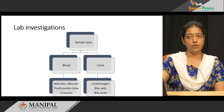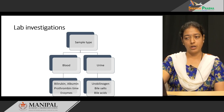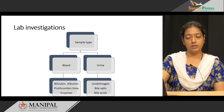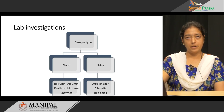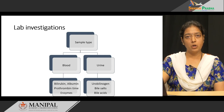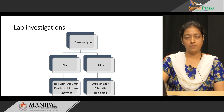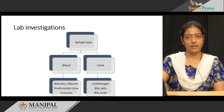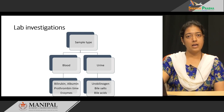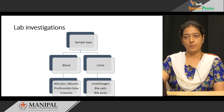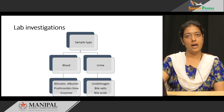Coming to lab investigations for differential diagnosis of jaundice, two types of samples can be collected: blood and urine. In blood, we can measure serum total bilirubin, serum unconjugated and conjugated bilirubin, albumin, prothrombin time, and enzymes such as aspartate transaminase, alanine transaminase, alkaline phosphatase, and gamma glutamyl transferase. In urine, we can estimate urobilinogen levels, bile salts, and bile acids.